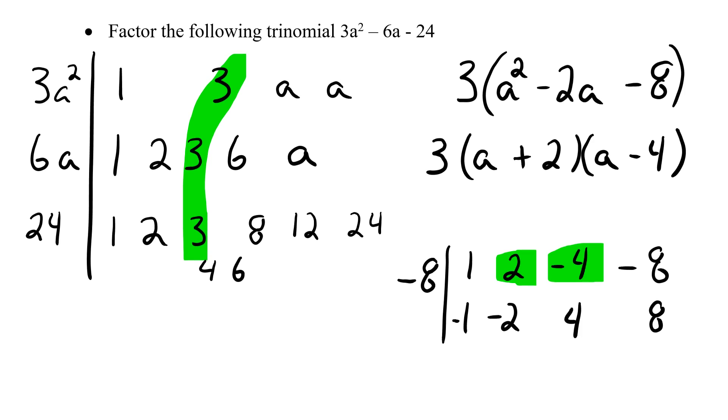Now of course we have this same check we could try. If I take all this and multiply it through, I should end up with my original trinomial. So I'm going to get my binomials combined first. So I'm going to go with 3, and then I'm going to get a times a, which is a². So I'm going to get a², 2a, positive 2a, -4a, -8.